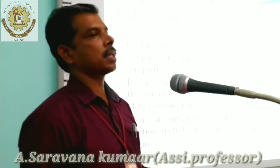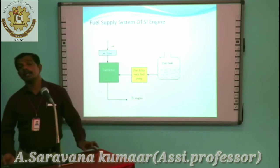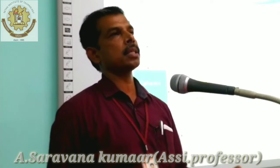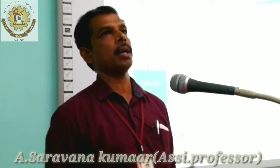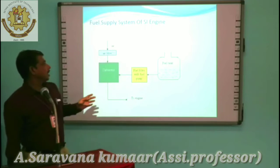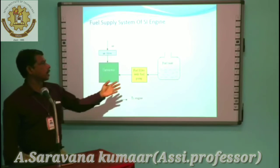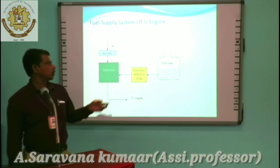There are different fuel supply systems for CI and SI engines. Here is the supply system for SI engines. In the SI engine, the carburetor is the heart of the system. The carburetor mixes the air and fuel as per the requirement. The atmospheric air enters into the carburetor through an air filter, and petrol enters into the carburetor through a fuel filter.